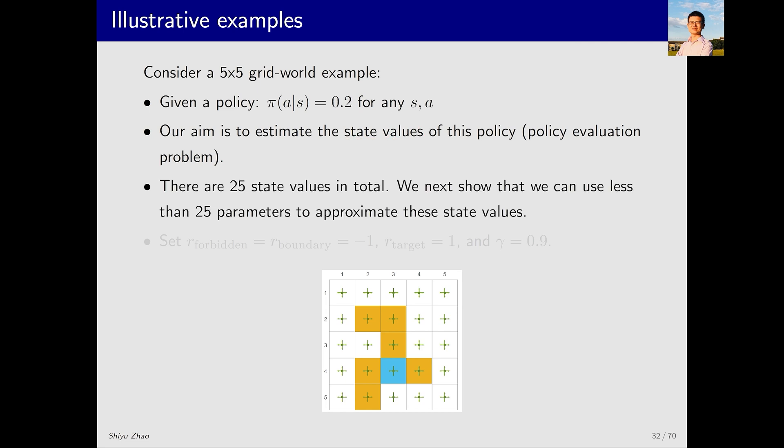If I use a tabular method that we learned in previous lectures, I need to store 25 state values. However, if I use the tdLinear method introduced just now, we can use fewer parameters to approximate these 25 state values quite well.